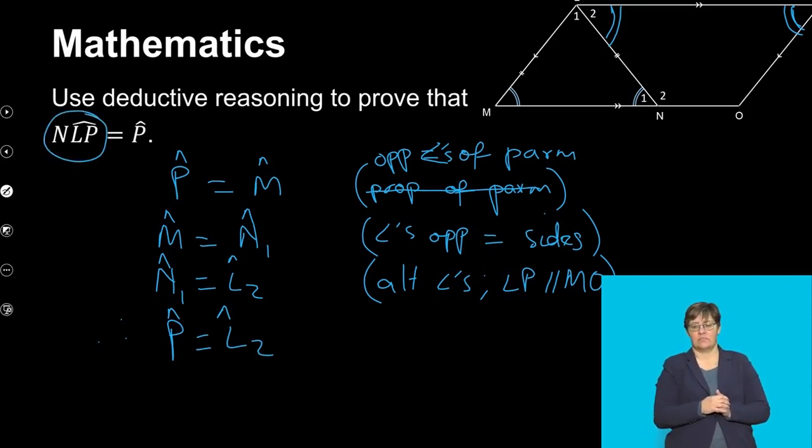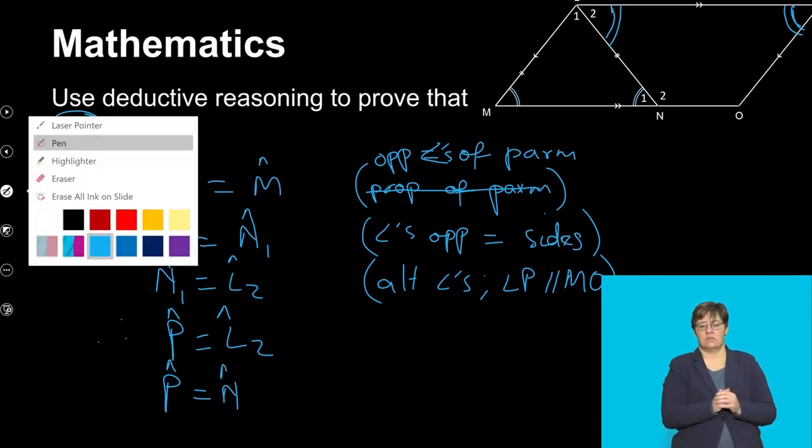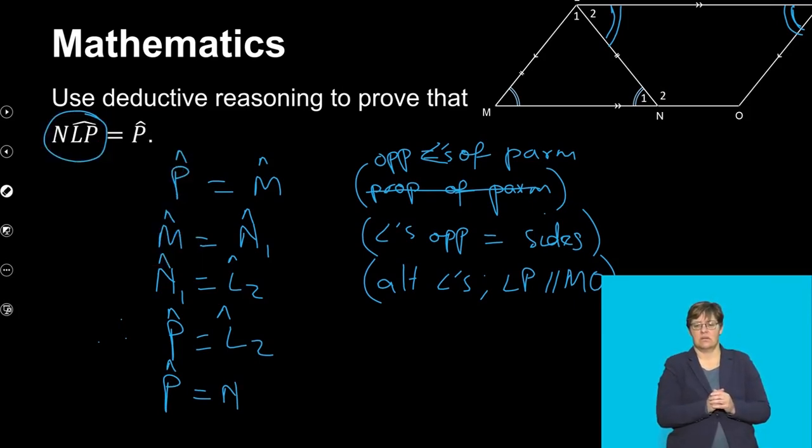And you know that L2 is this one here. And you don't need a reason for that. But you can always just say P is therefore equals to NLP, not angle at N. You can always go back and write it the way the question wanted you to do it, which is NLP. But NLP is this angle here, which is just N2.